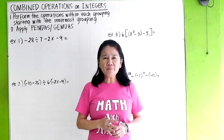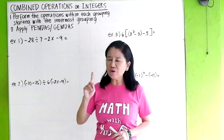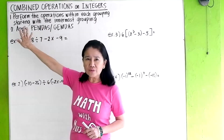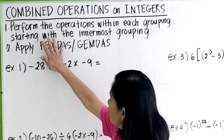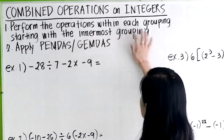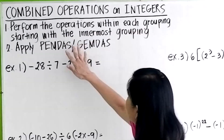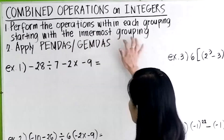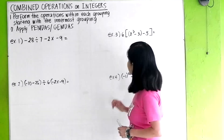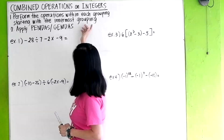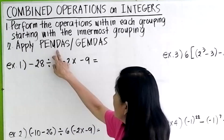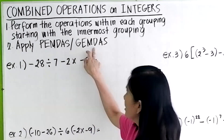For combined operations on integers, you always have to remember this rule. You have to perform the operations within each grouping, starting with the innermost grouping. I'm going to show you that here. Also, number two, apply the PEMDAS or the GEMDAS.